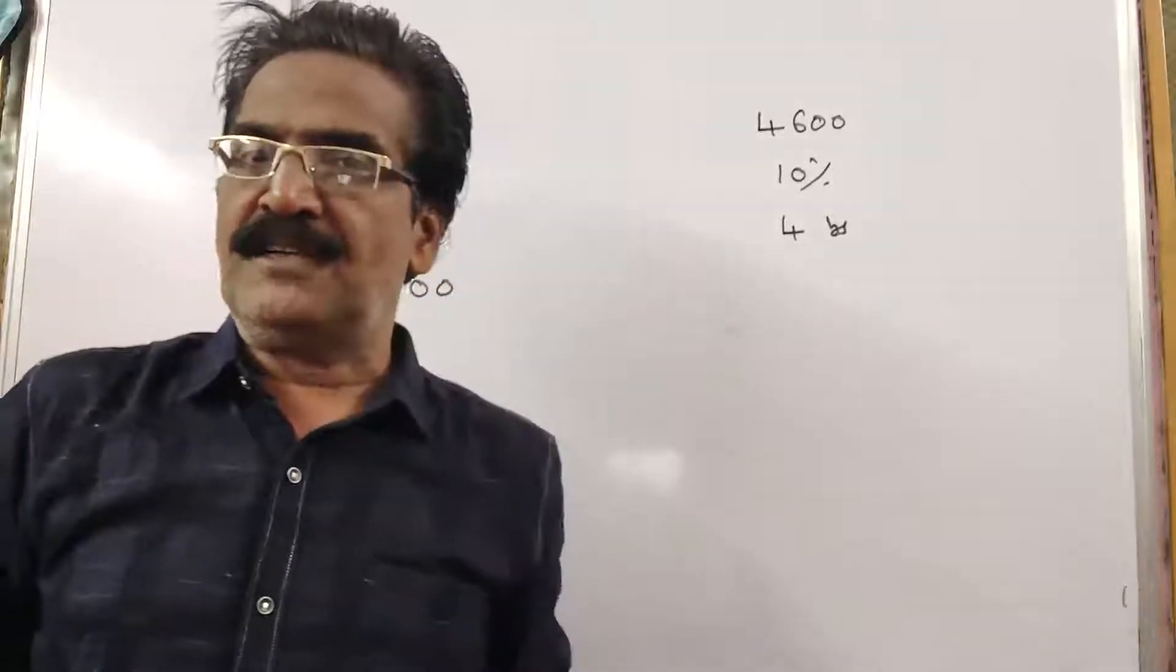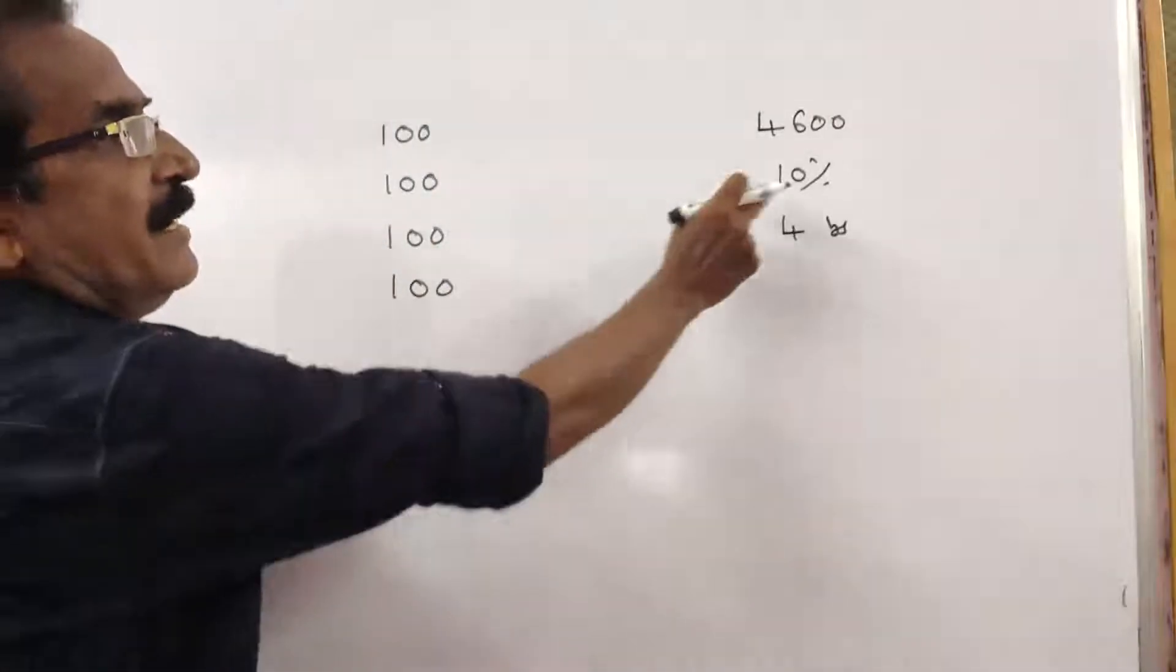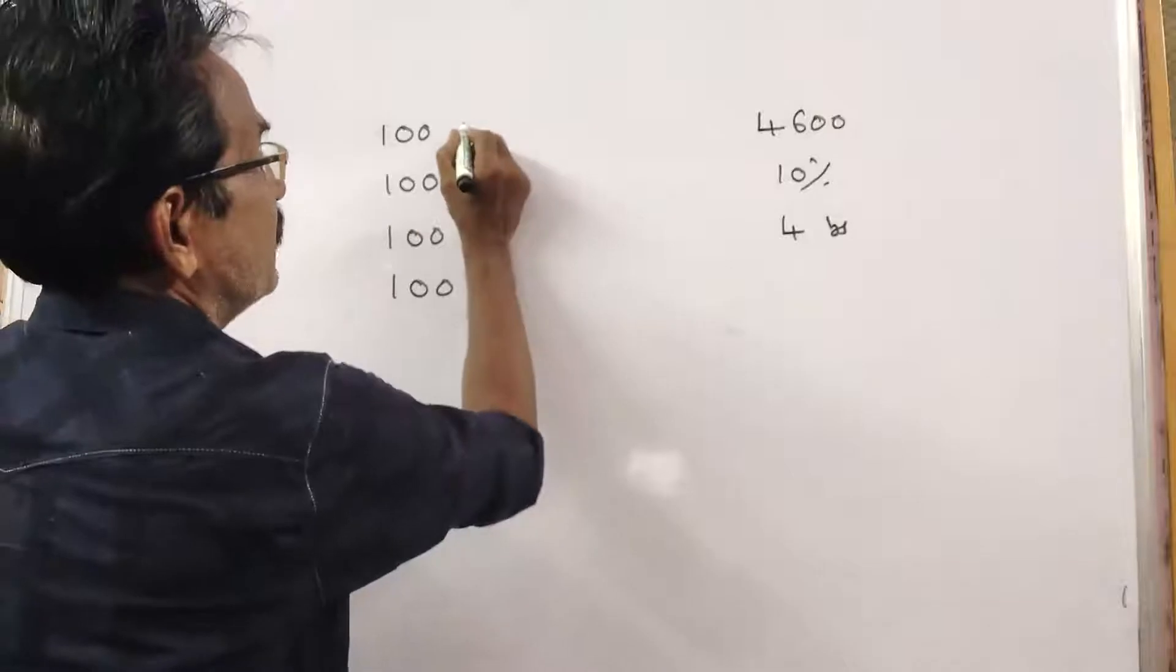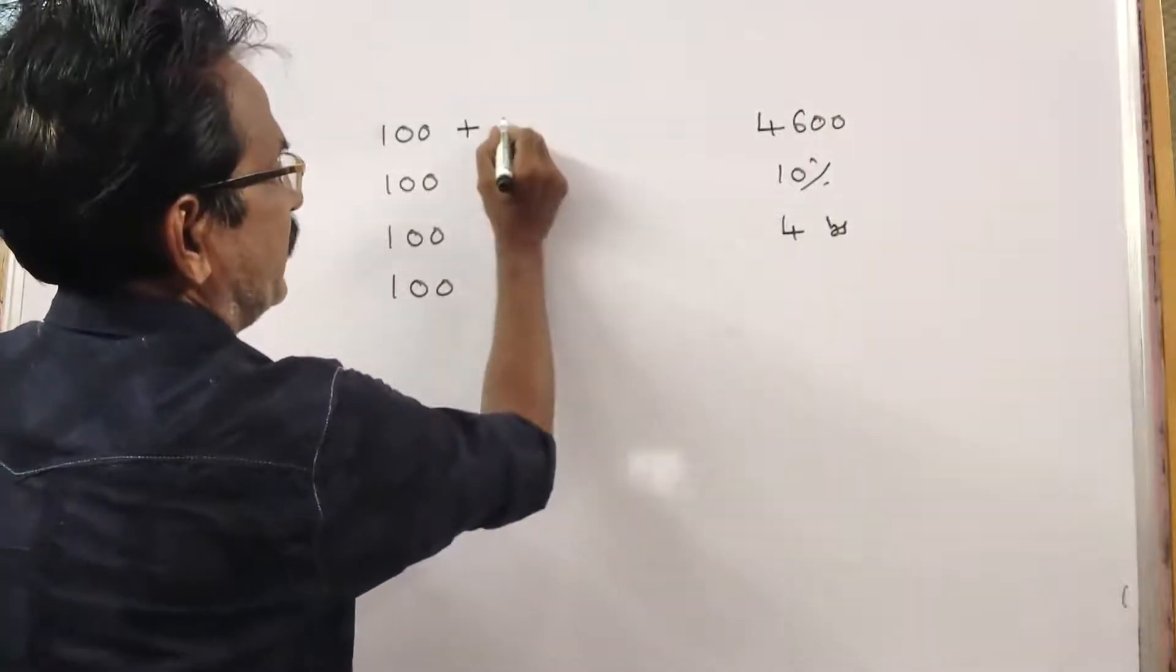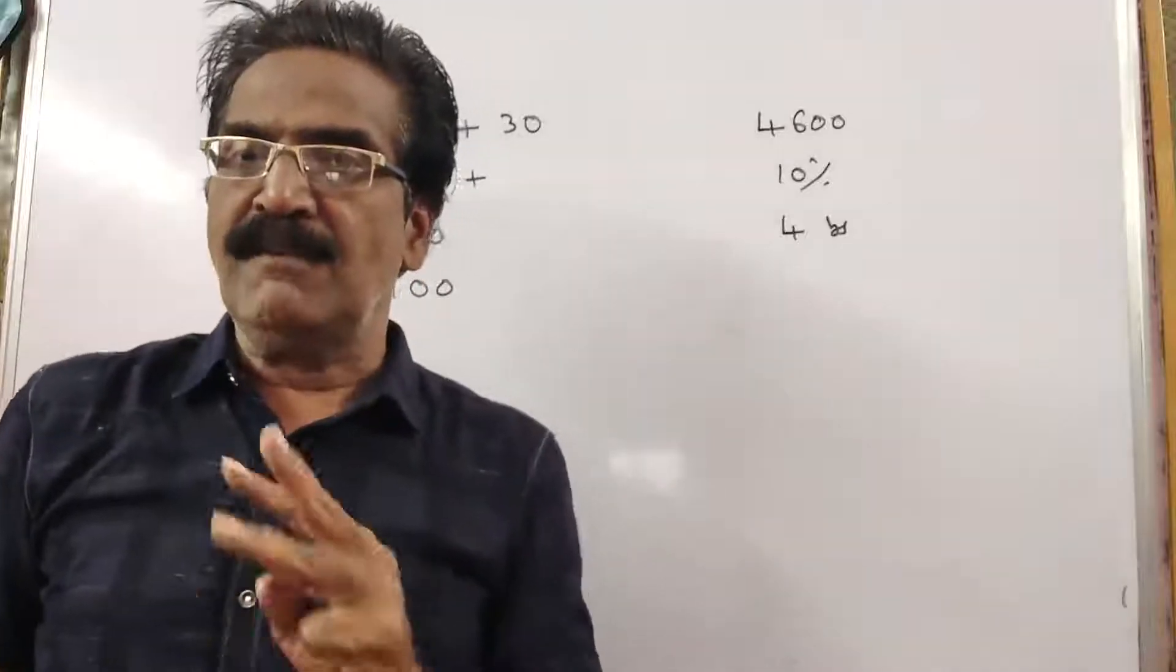See friends, the installment you pay at the end of the 1st year will fetch interest for 3 years. The annual interest is 10. For 3 years, the interest will be 3 times 10, that's 30.